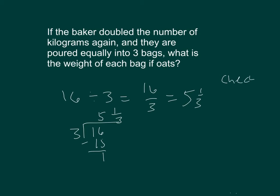Here's our check. 3 times 5 and 1 third, which equals 5 and 1 third plus 5 and 1 third plus 5 and 1 third. 5 plus 5 plus 5 equals 15. 1 third plus 1 third plus 1 third is 3 thirds. So 15 plus 3 thirds is equal to 16. So it does check. Each bag of oats weighs 5 and 1 third kilograms.